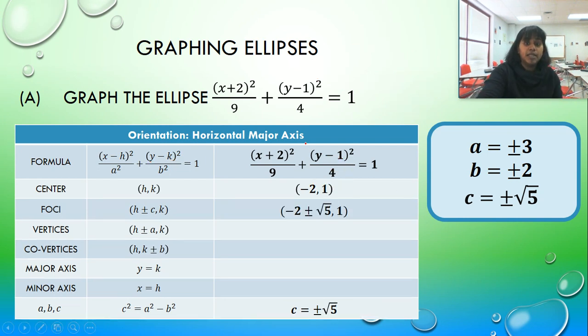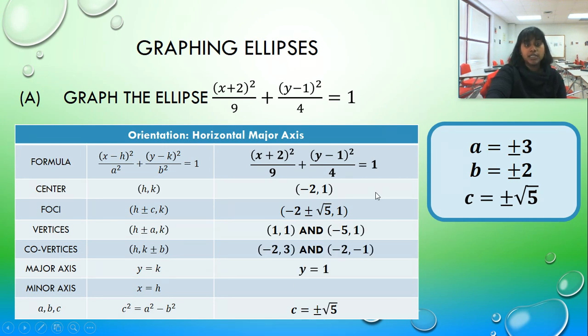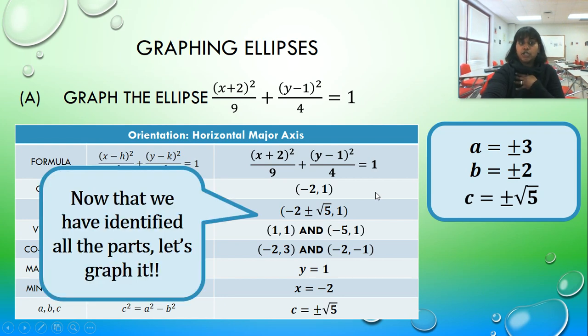Now plug it in. h ± c is going to be -2 ± √5. So guess how many foci you actually need? Two is the correct answer. Same with your vertices. So here you can actually segment it out. But since that's just going to be left as ±√5, let's go ahead and leave it as plus or minus. This one can be segmented out. Same with this one. We can declare our major and minor axes.